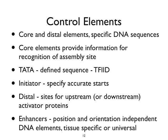Sometimes there is a sequence called an initiator that specifies absolute accurate starts, and it turns out that the five-prime ends of mammalian cell or viral RNAs frequently have a little bit of play. There are distal sites that provide sites upstream or downstream for activator proteins — proteins that enhance the initiation event, either by bringing polymerase to the promoter or by physically interacting with and changing the polymerase. And then we have enhancers.